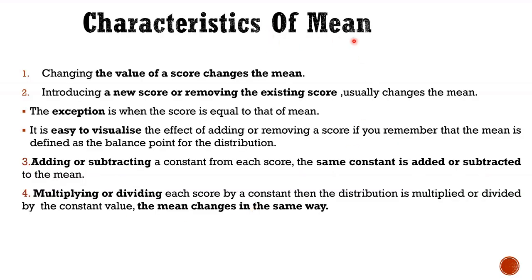Now what are the characteristics of a mean? Changing the value of a score changes the mean because sum of x will change. Introducing a new score or removing an existing score usually changes the mean because sum will change and number of scores will change. The exception is only when a score equal to the mean is added. It is easy to visualize the effect of adding or removing a score if we remember that mean is defined as a balance point of the distribution.